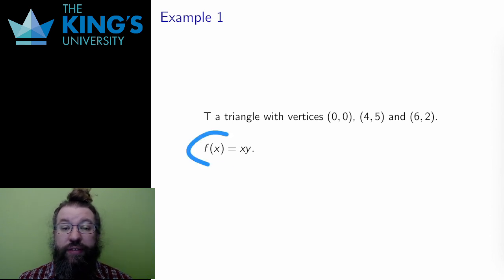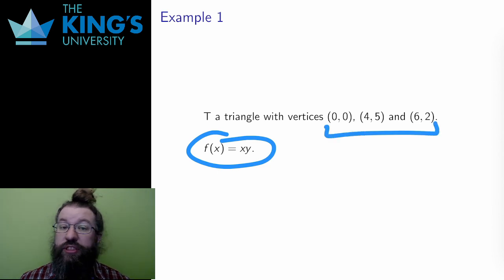I'll start by integrating the scalar field f(x,y) = xy over a triangle in R² with vertices (0,0), (4,5), and (6,2).